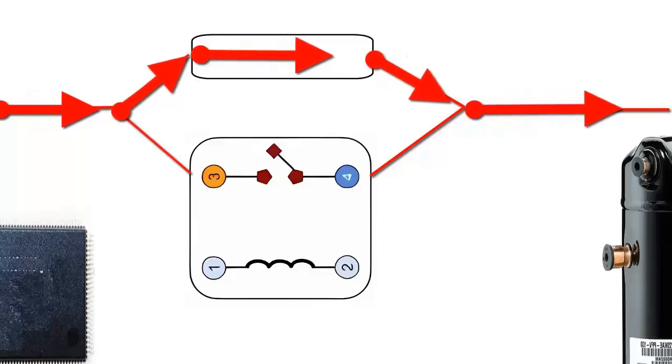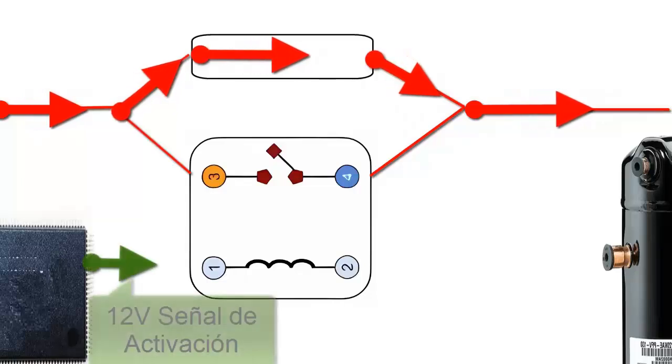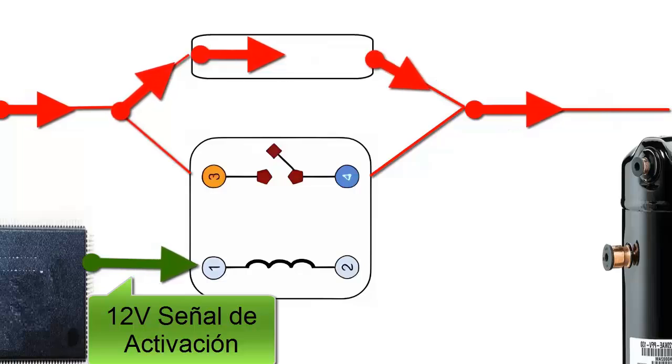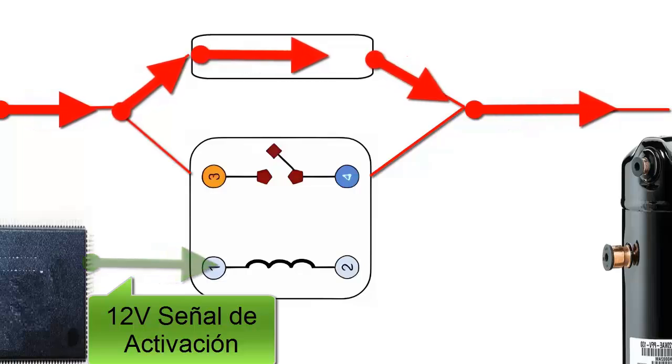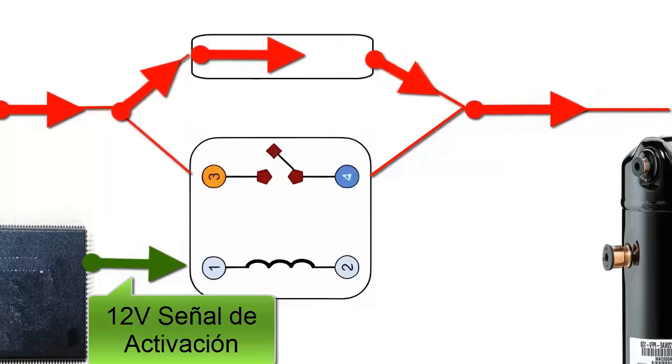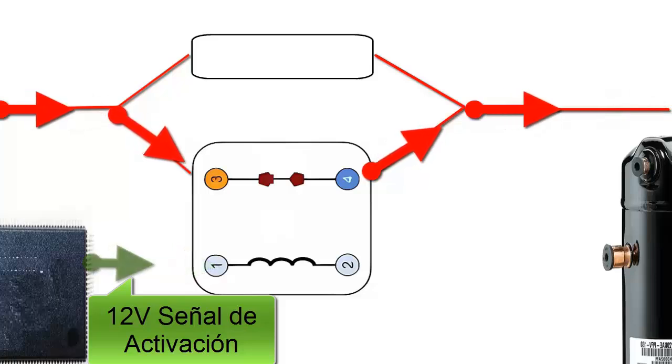Then, upon sensing a normal current consumption, the electronic board's controller sends an activation signal to the main contactor, in this case, 12 volts. The 12-volt activation signal energizes the coil of the main contactor, creating a magnetic field strong enough to close the main contactor switch.